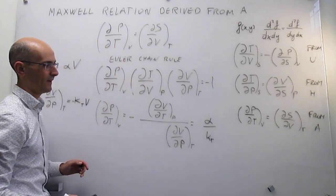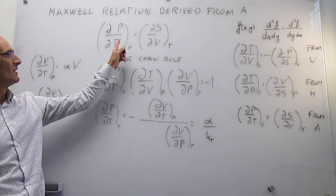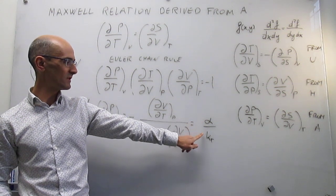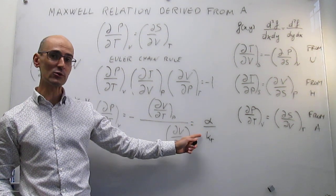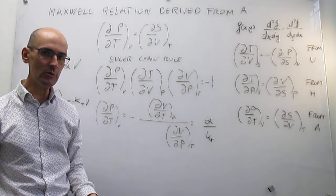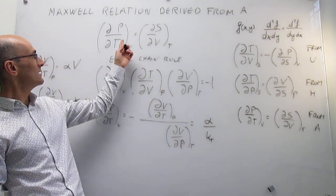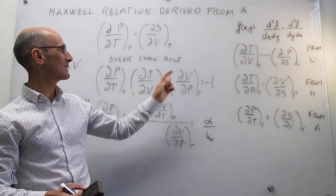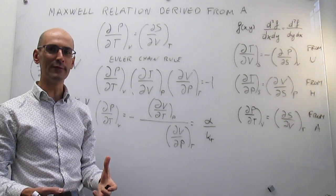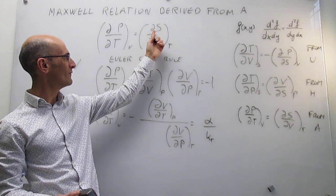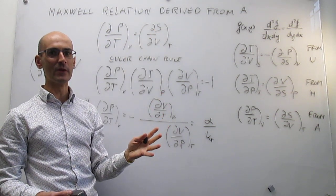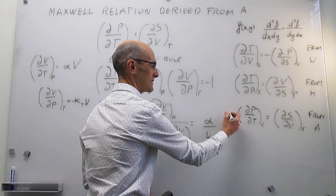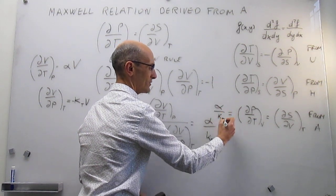Notice how simple this turns out to be. The first derivative of pressure with respect to temperature at constant volume is simply the ratio of two observable properties: the expansion coefficient alpha divided by the isothermal compressibility kappa_T. These are numbers that we actually know. If you know these numbers for a pure substance — say graphite, CO2, or any substance — then you know this first derivative, and that also tells you the variation of the entropy of a substance as you change the volume isothermally. This illustrates the usefulness of Maxwell relations: something not obvious to calculate turns out to be the simple ratio alpha over kappa_T.